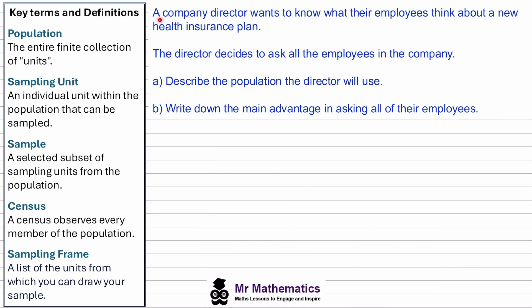Now we're told that a company director wants to know what their employees think about a new health insurance plan, and the director decides to ask all the employees in the company. For part A we've been asked to describe the population that the director will use, and for part B write down the main advantage in asking all of their employees.